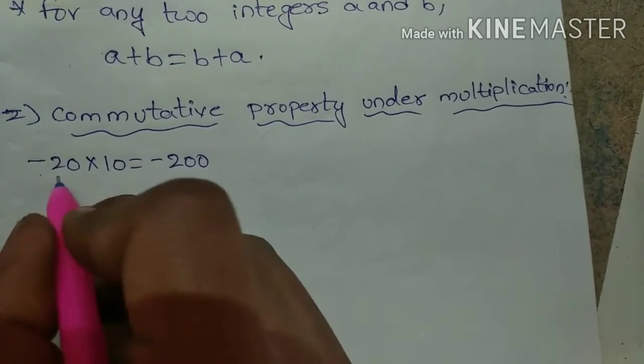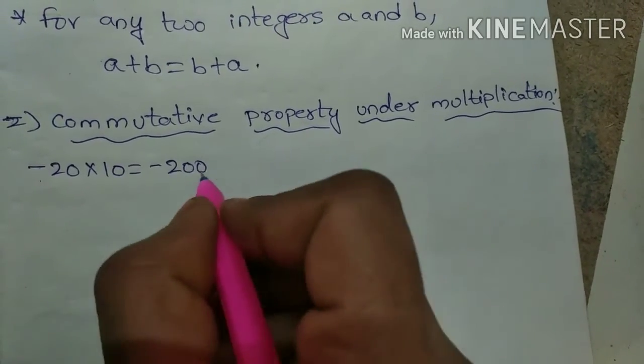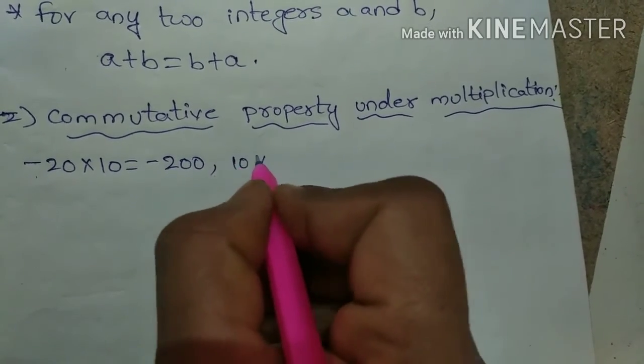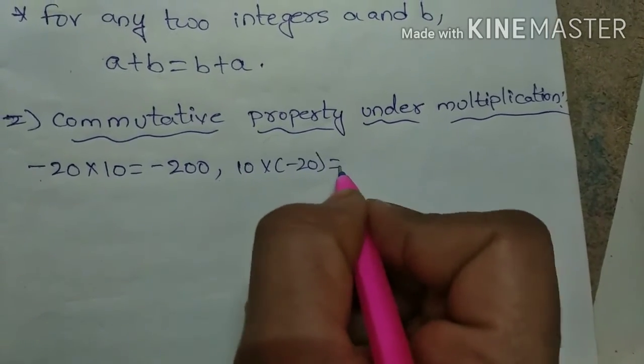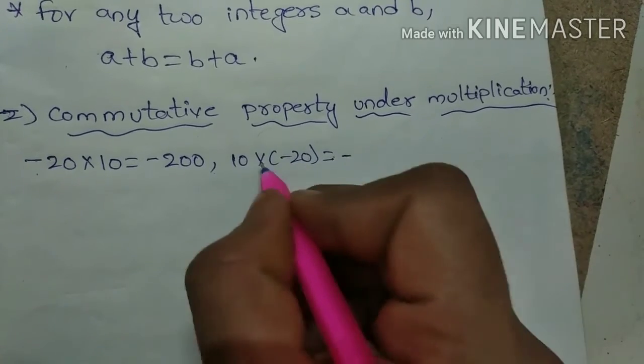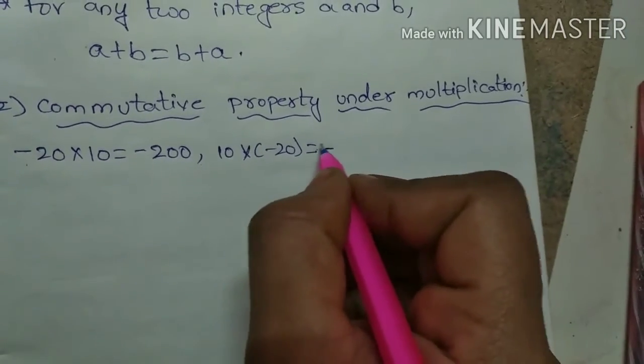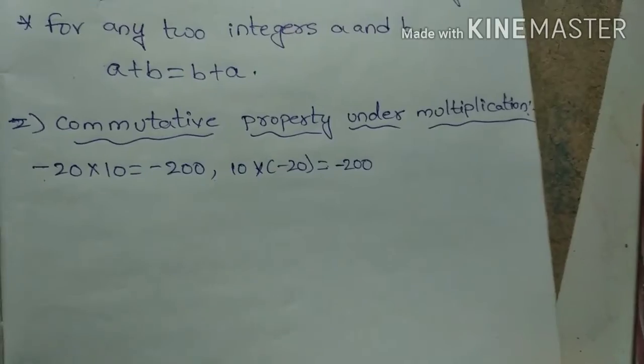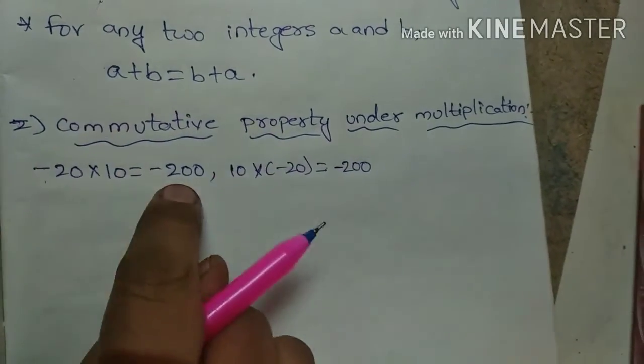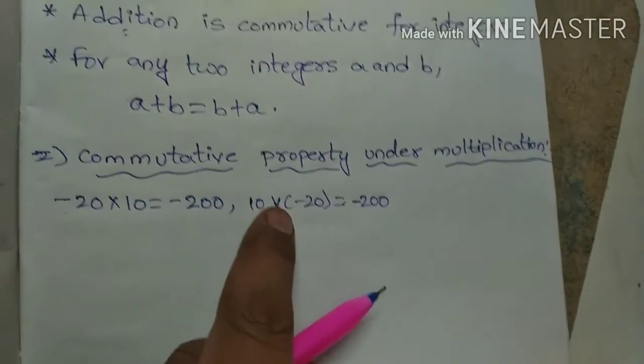10 × (-20) equals the same: minus into plus is minus, and 10 × 20 is 200. This is the same result coming here. In the place of plus, I am taking the multiplication symbol.